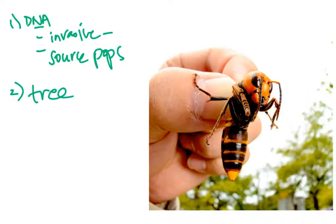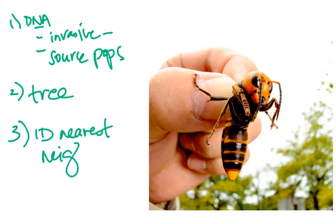So you get your DNA samples. You can pull out some type of marker like SNPs. What you then want to do is build a tree from that molecular data. And then when you're looking at that tree, what you want to do is identify the nearest neighbor to your invasive species, just like we did with that bat example. The nearest neighbor on the tree is likely the origin source for the invasive sample that you have.